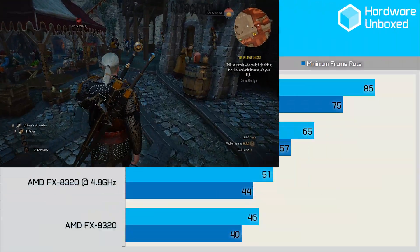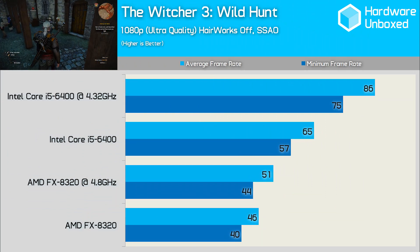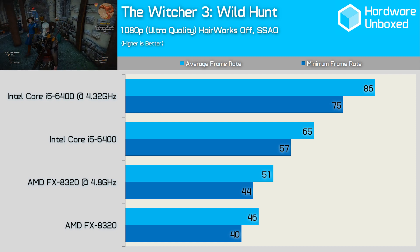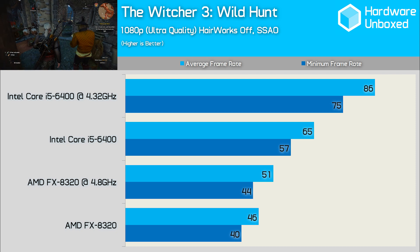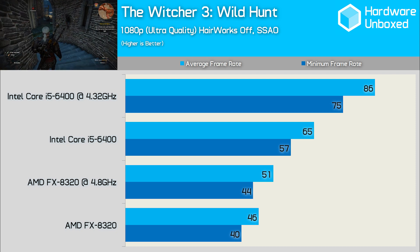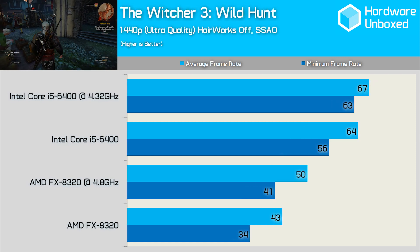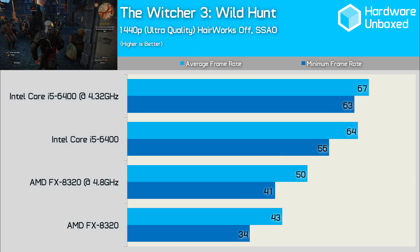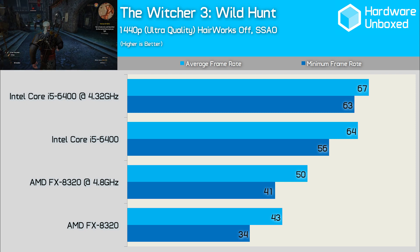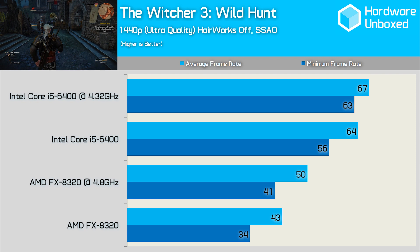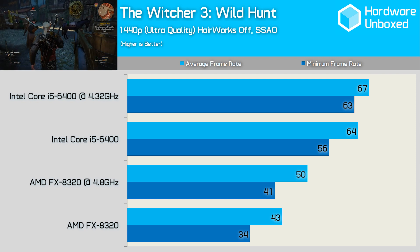The Witcher 3 results are probably the most shocking we've seen so far. Even at 4.8GHz, the FX8320 is seriously outclassed by the stock Core i5-6400, which averaged 65 FPS — making it 27% faster. Overclocked, the 6400 was a beast, reaching an average frame rate of 86 FPS. Increasing the resolution to 1440p narrowed the gap between the overclocked and stock 6400 configurations, but it didn't help the FX8320 close in on the 6400, which remained almost 30% faster when comparing average frame rate.